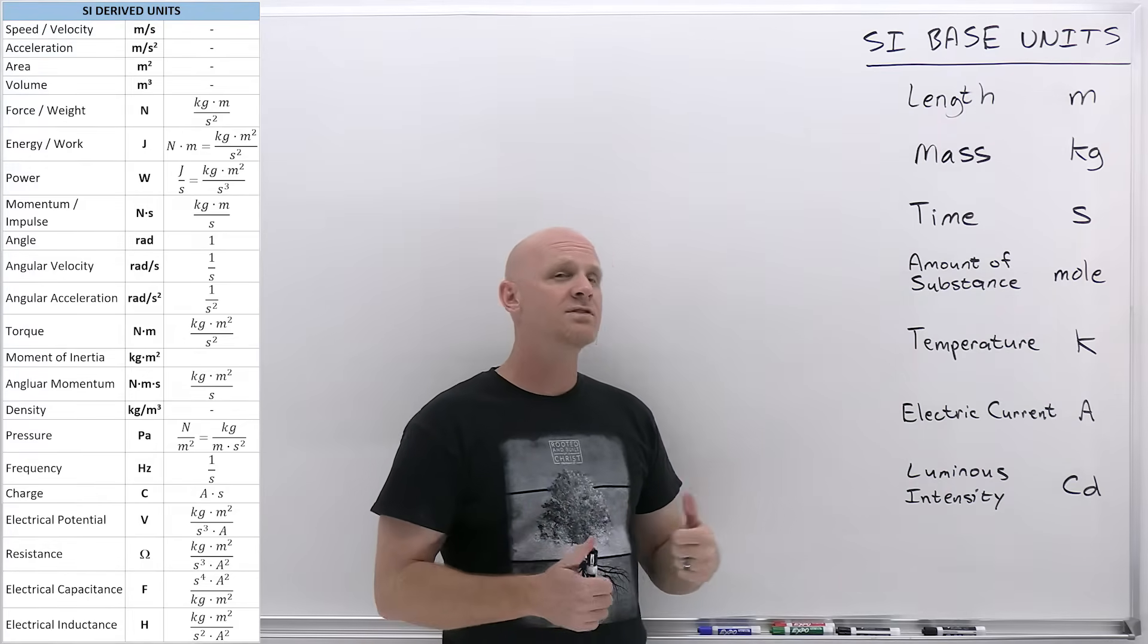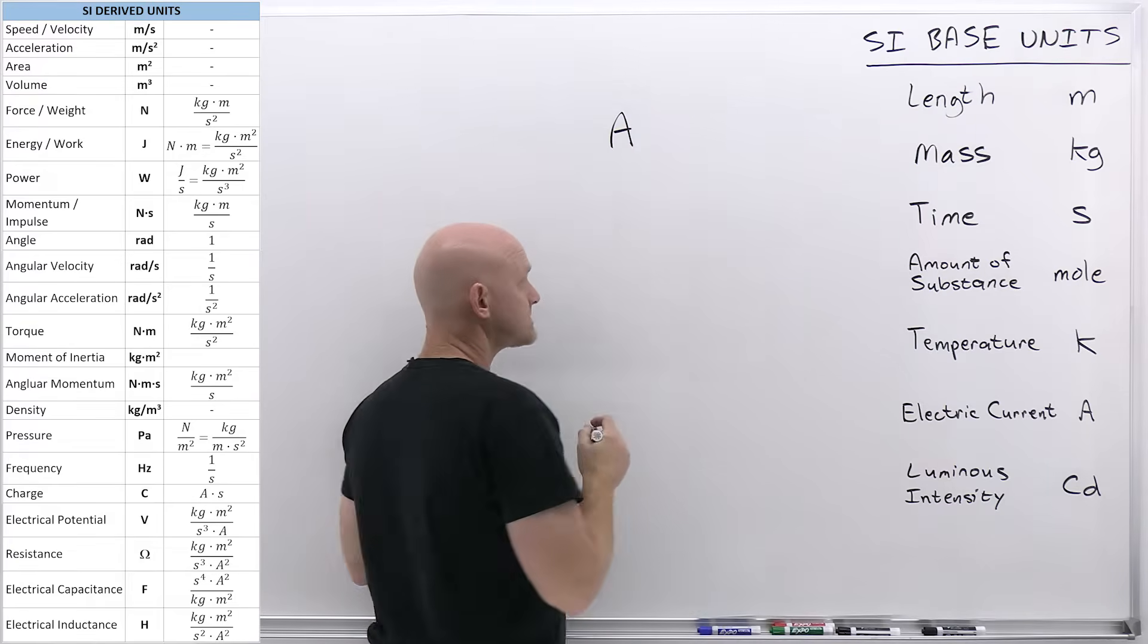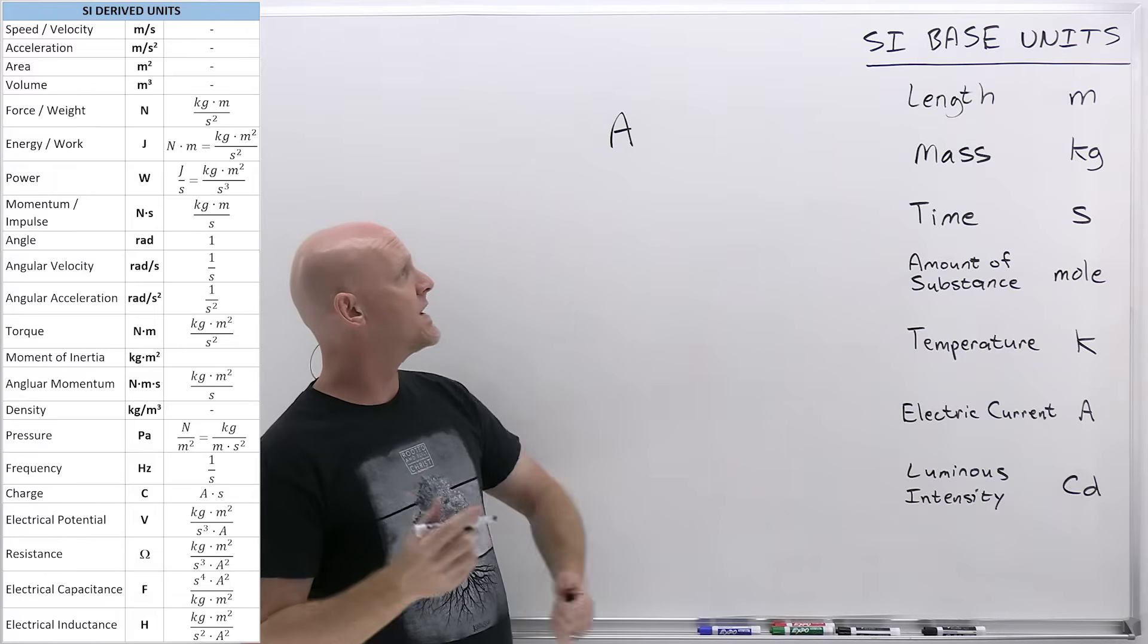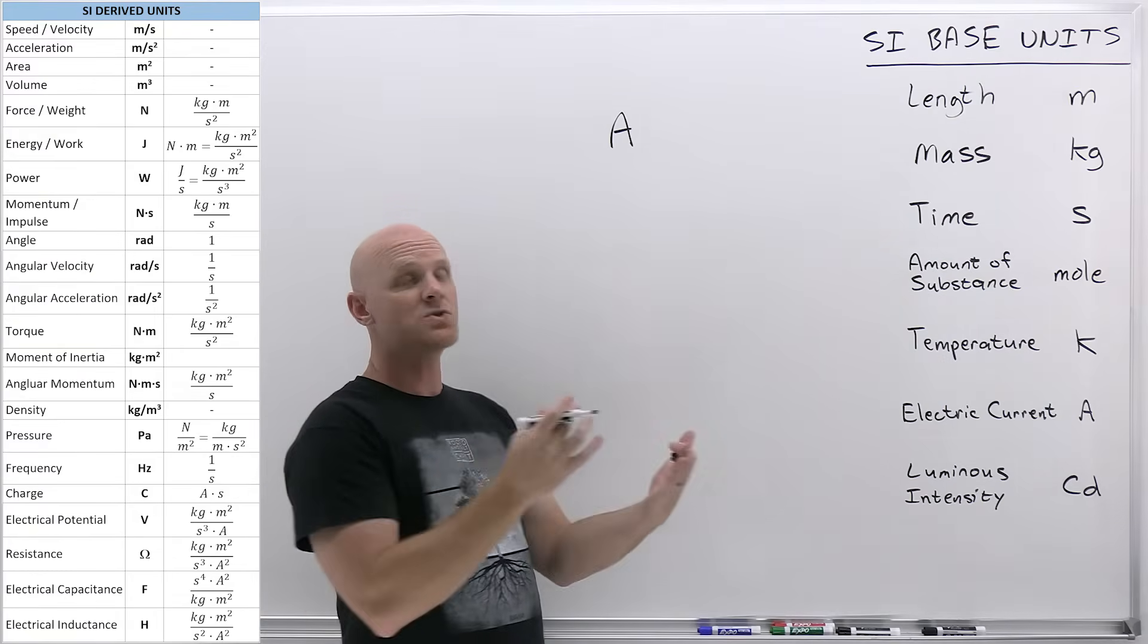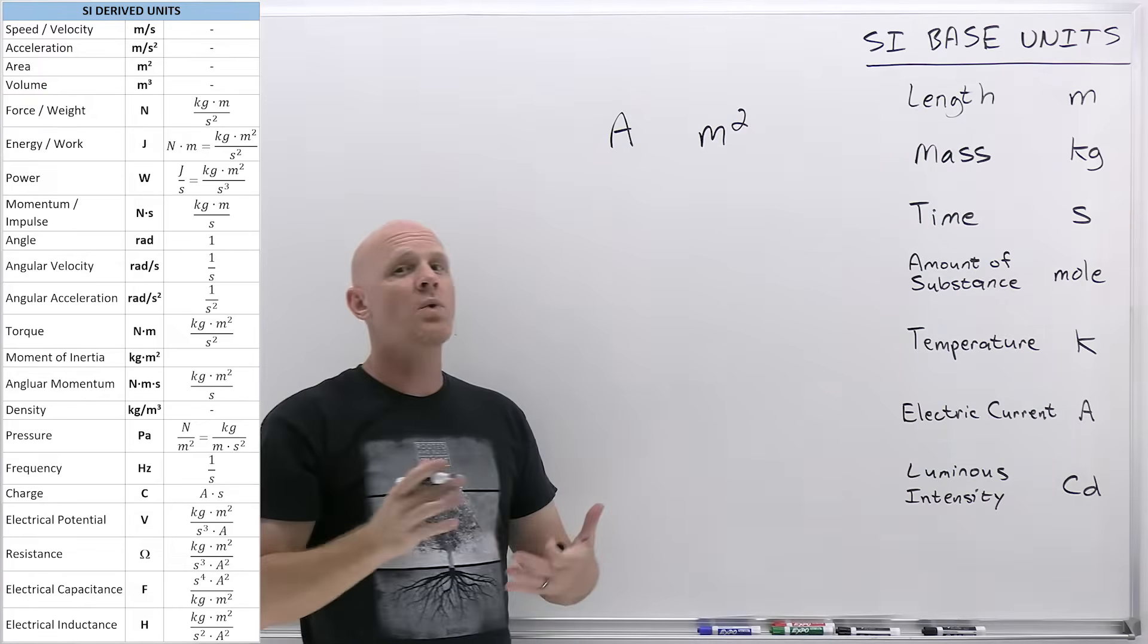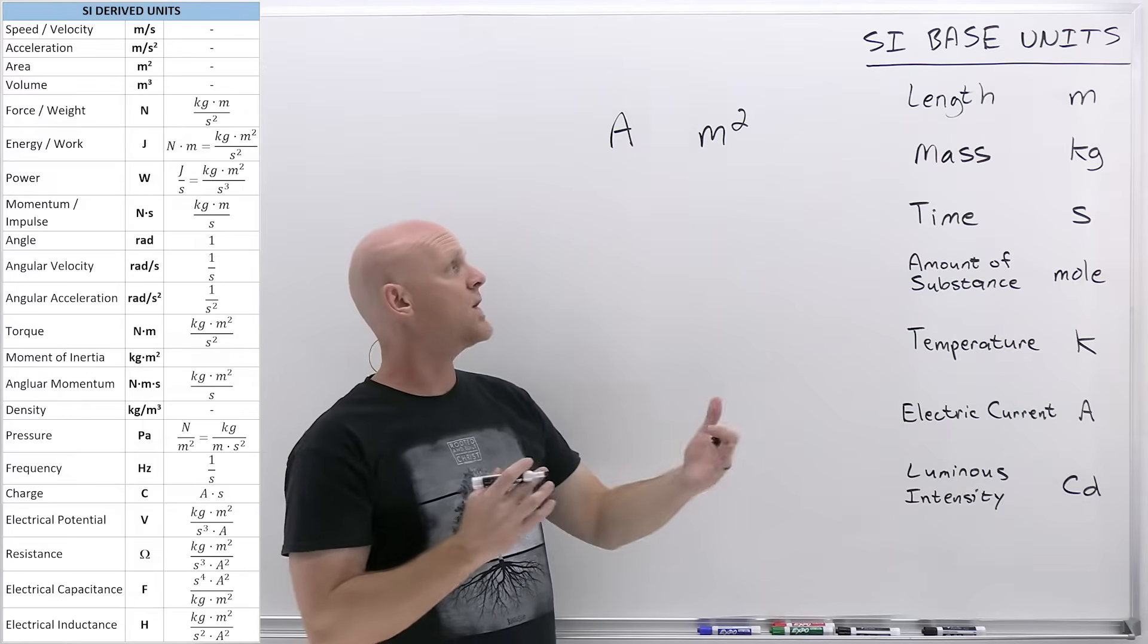Let's talk about some of the derived units. We'll start with area. An area, which is like length times width of a square or a rectangle, is going to be length squared. And so it's going to have units of meters squared. That's a derived unit. It's not a base unit, but it is derived from the unit of length, in this case, length squared.